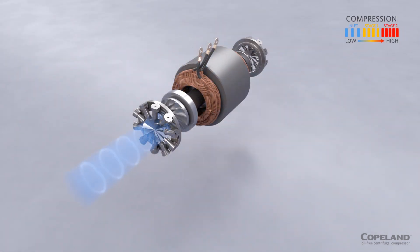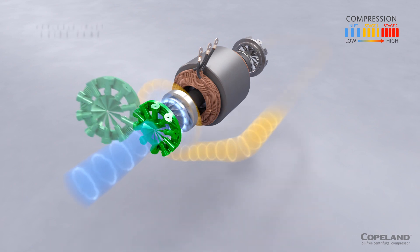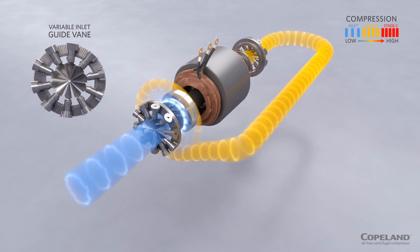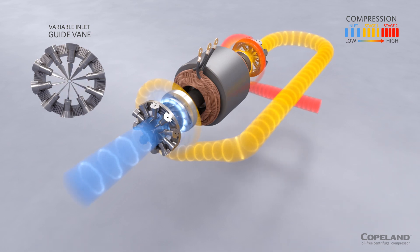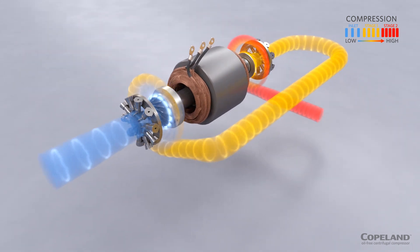As the first-stage impeller draws the refrigerant gas in, its flow is regulated by the variable inlet guide vane, which maximizes the compressor range in both surge and choke conditions.